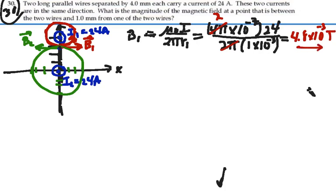And that's going to the right like this. For the other magnetic field, B2, that's going to be mu naught I2, this would have been I1 up here, over 2 pi R2.